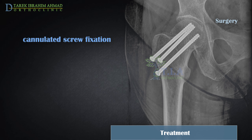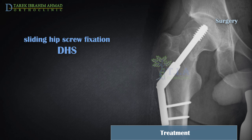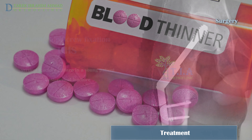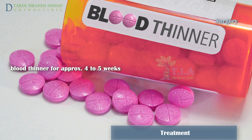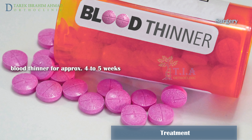Cannulated screw fixation is recommended when the fracture is not older than 24 hours, the fracture is not displaced, the patient has good bone quality with no signs of osteoporosis, and in young patients under 60 with more vertically oriented fractures such as Pauwels Type 3 basicervical fractures. A sliding hip screw is biomechanically stable. Deep venous thrombosis prophylaxis should be started during the perioperative period and continued for four to six weeks postoperatively.